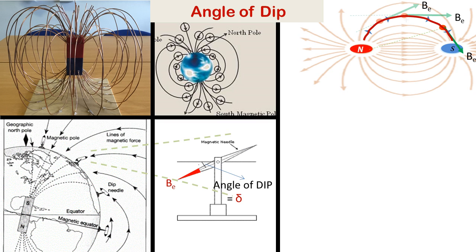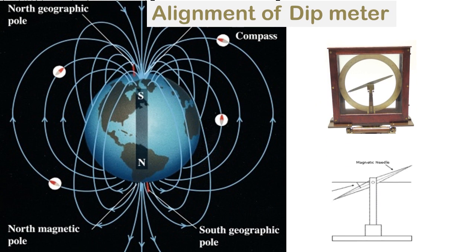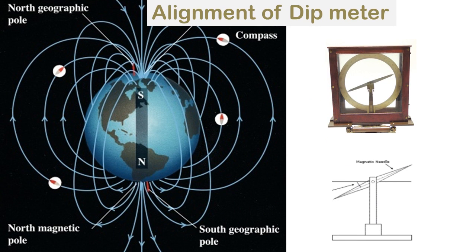Be is the earth's magnetic field. BH and BV are the horizontal and vertical components of the earth's magnetic field. The dip meter should be aligned with the magnetic meridian so that we get the correct values for the earth's magnetic field.